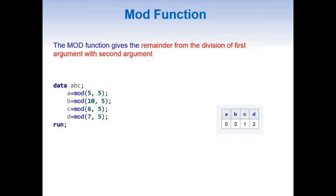Now let us quickly look into the MOD function. The MOD function gives the remainder from the division of the first argument with the second argument. Let us try to understand this through an example. Here we are using the MOD function and capturing these values into variables.